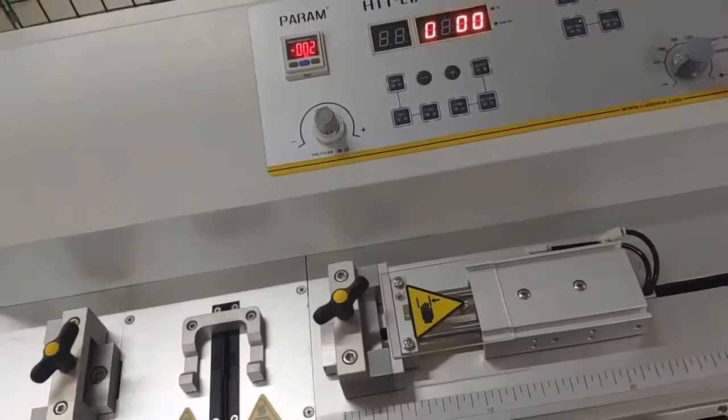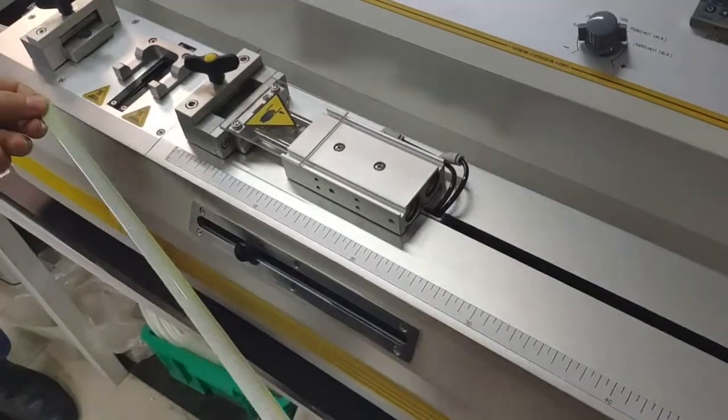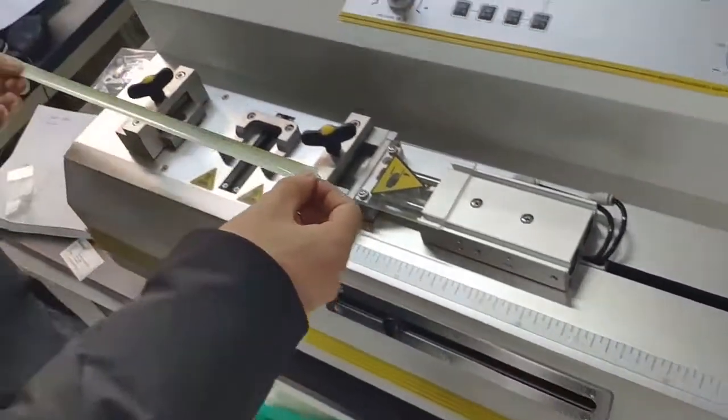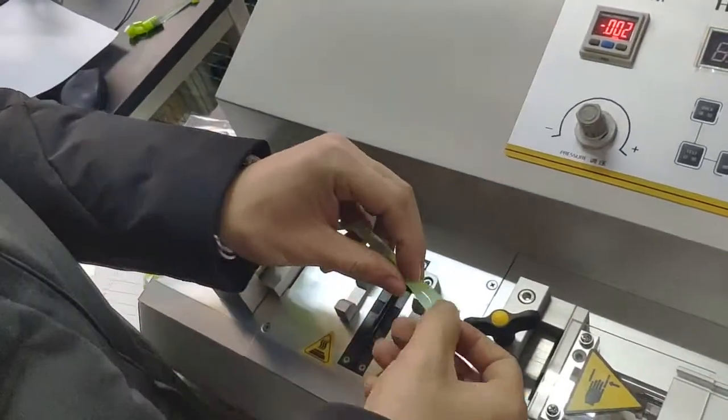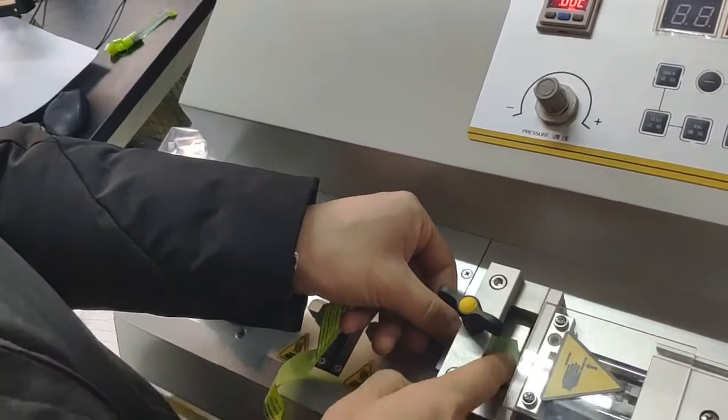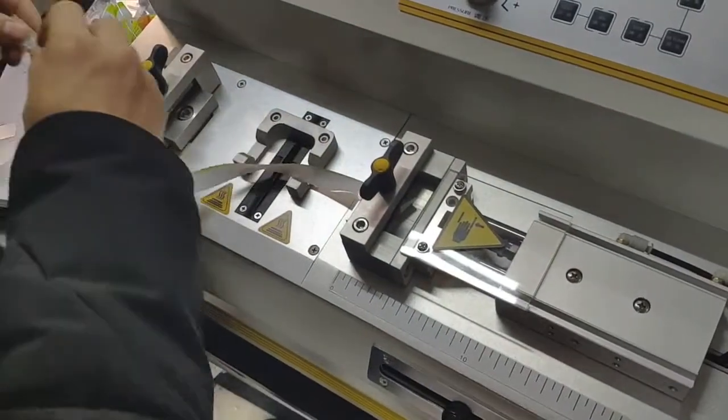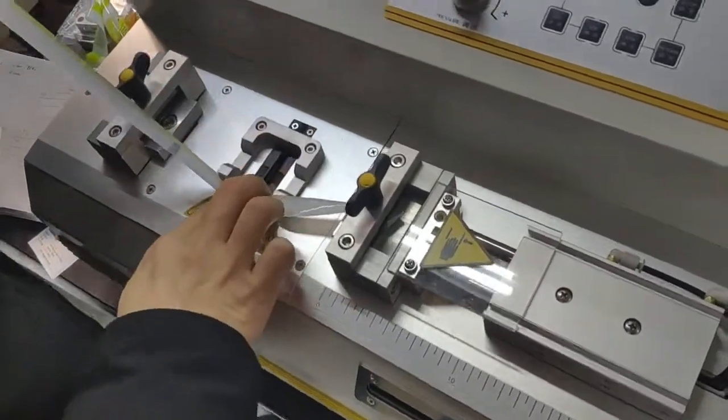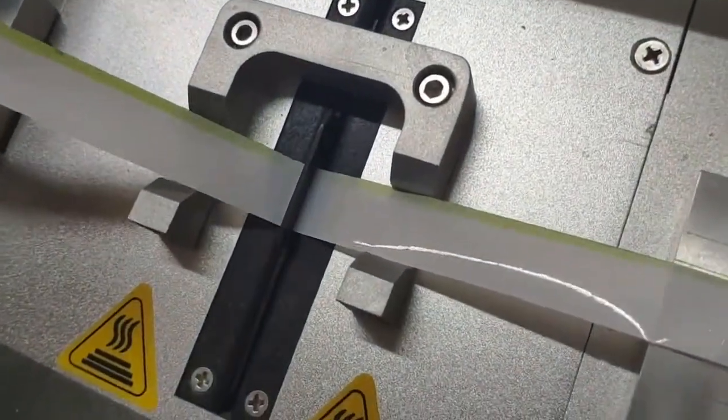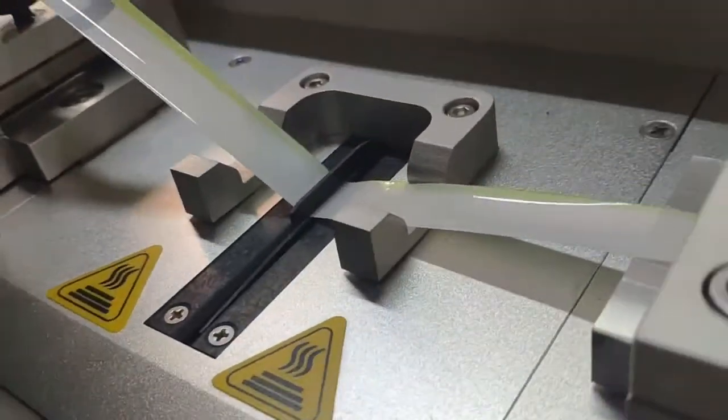Before starting a real test, there are some points you have to pay attention to. First, the sample strip must be 40 millimeters length. Now install the sample. Put the sample through the hook in the middle part.